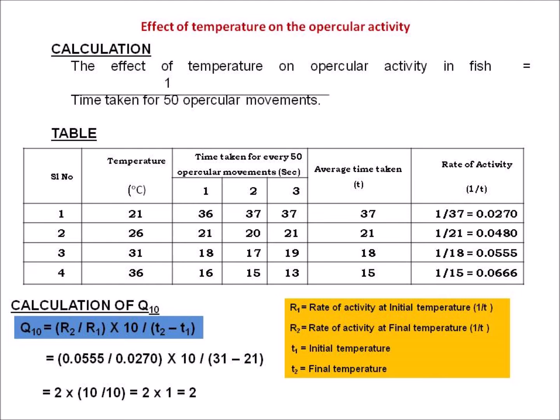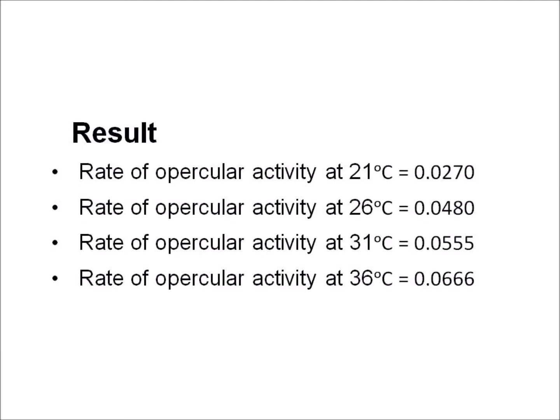That means the rate of activity increases. The results can be written as: rate of opercular activity at 21°C equals 0.0270, at 26°C equals 0.0480, at 31°C equals 0.0555, and at 36°C the rate of opercular activity is 0.0666.